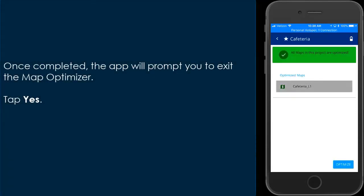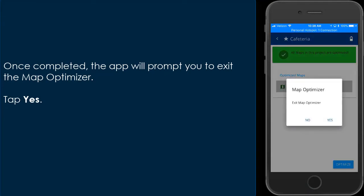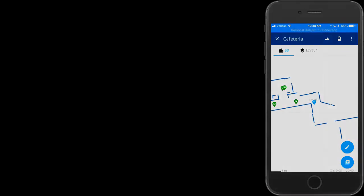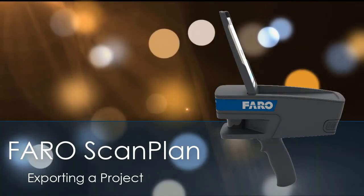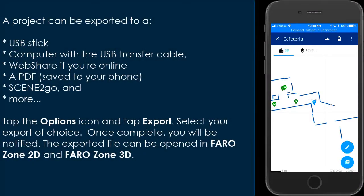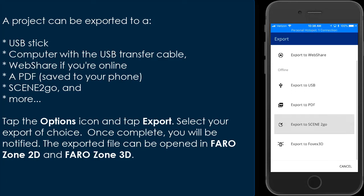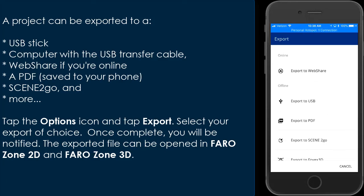Once completed, the app will prompt you to exit the Map Optimizer. Tap Yes. FaroScan Plan — Exporting a Project. A project can be exported to a USB stick, computer with a USB transfer cable, web share if you're online, a PDF saved to your phone, Seen to Go, and more. Tap the Options icon and tap Export. Select your export of choice. Once complete, you will be notified. The exported file can be opened in Faro Zone 2D and Faro Zone 3D.